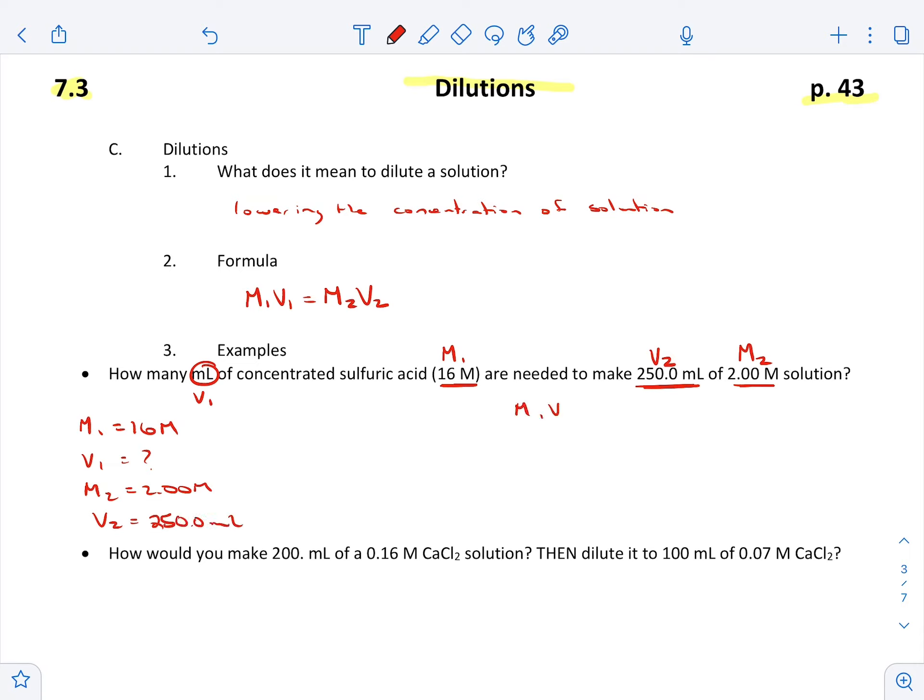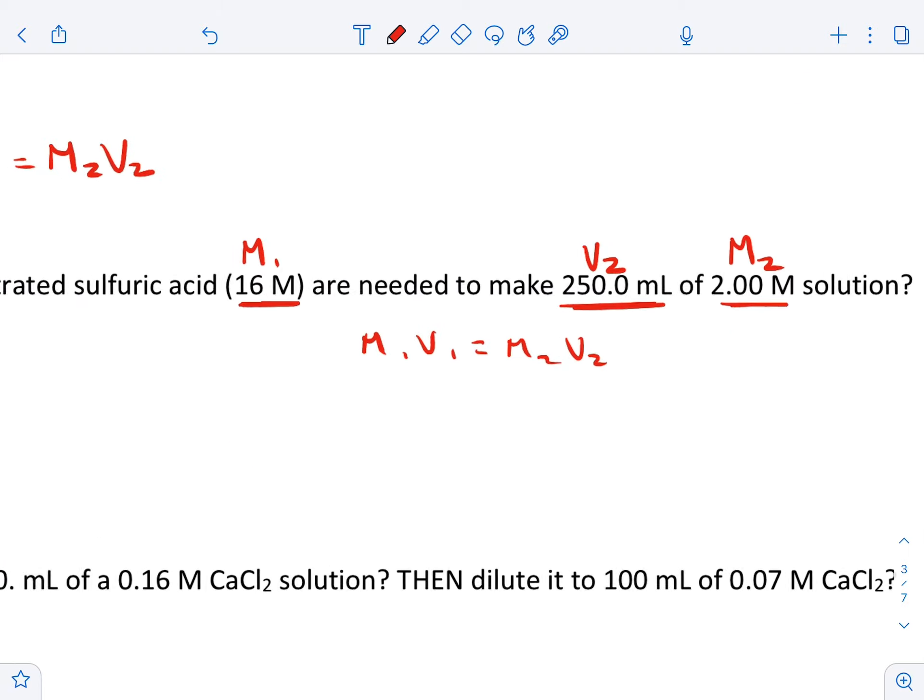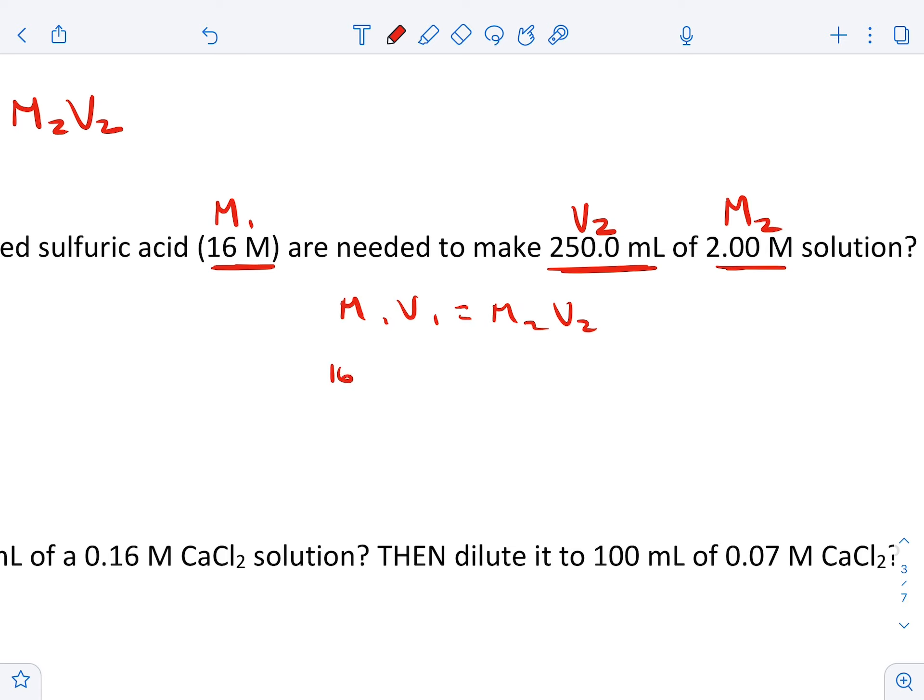Okay, so now we're just ready to plug it into the formula M1V1 equals M2V2, and let's plug our stuff in. We've got 16 times V1 is equal to 2 times 250. All right, so to isolate V1, we're going to divide each side by 16 to get V1 by itself, so 2 times 250 divided by 16 is what we've got.